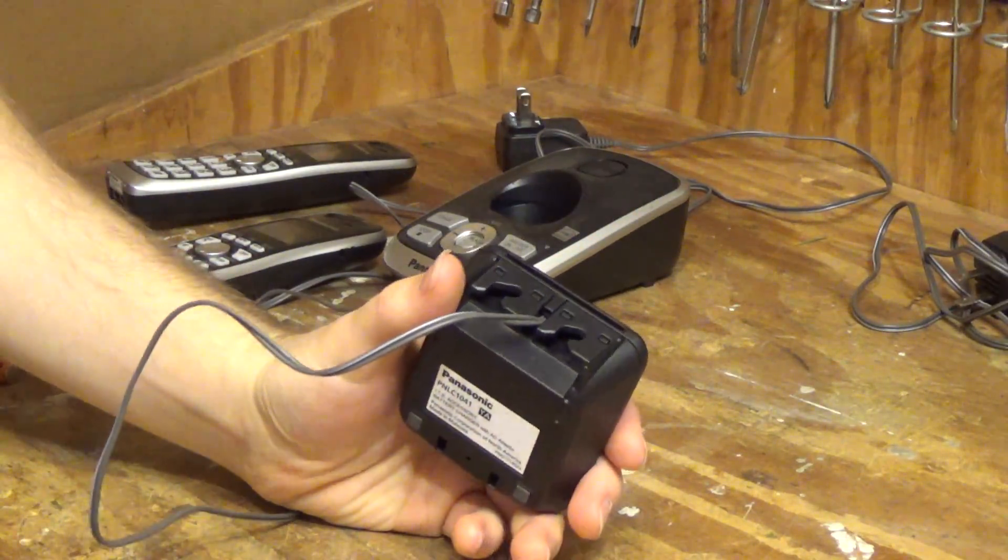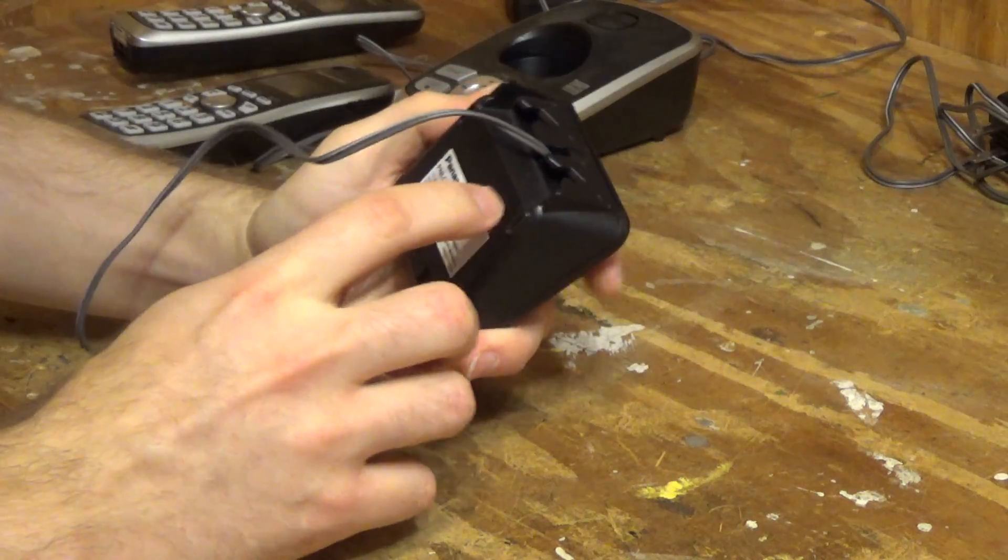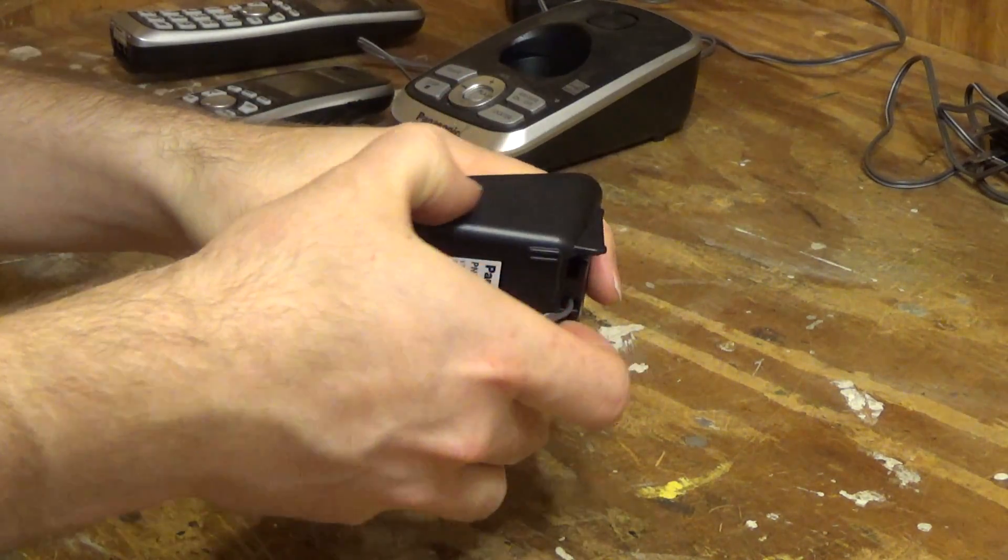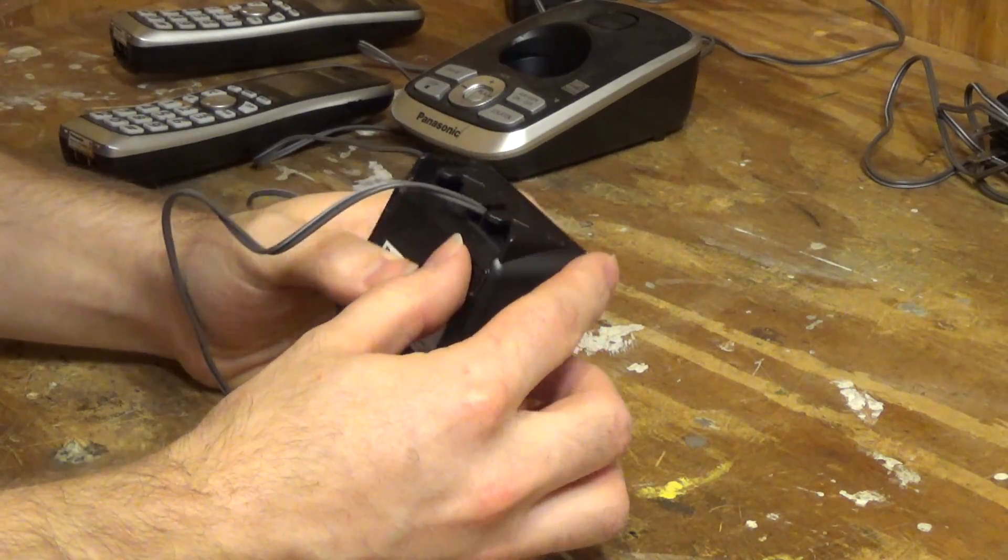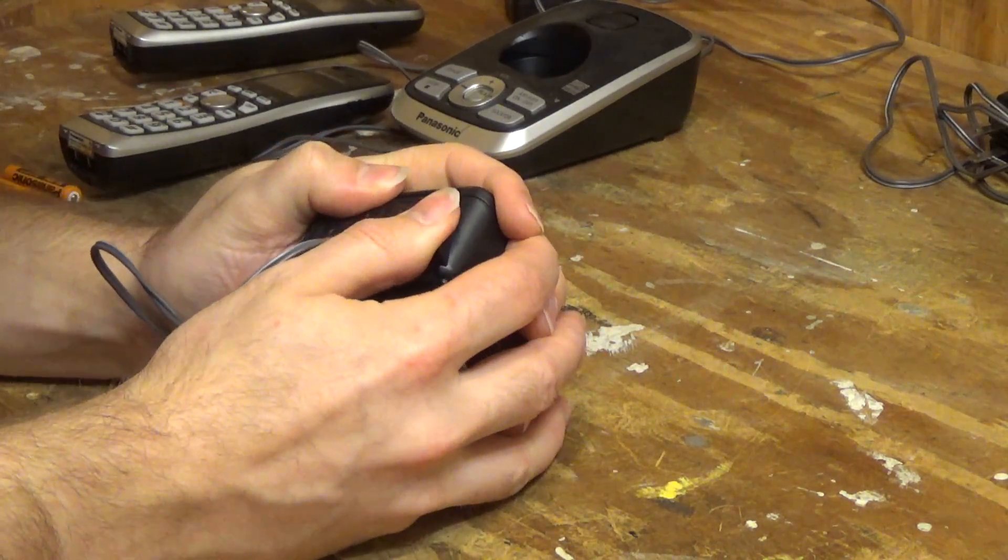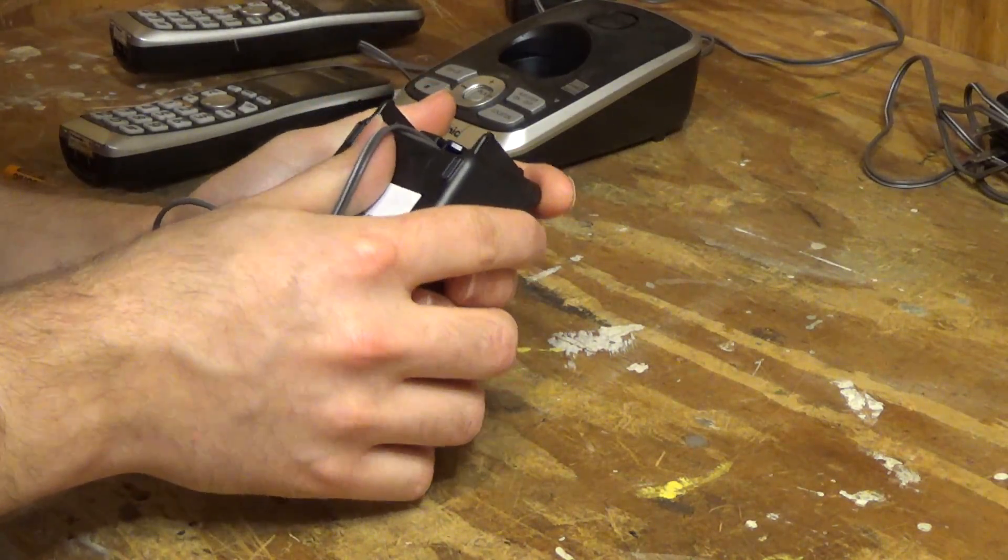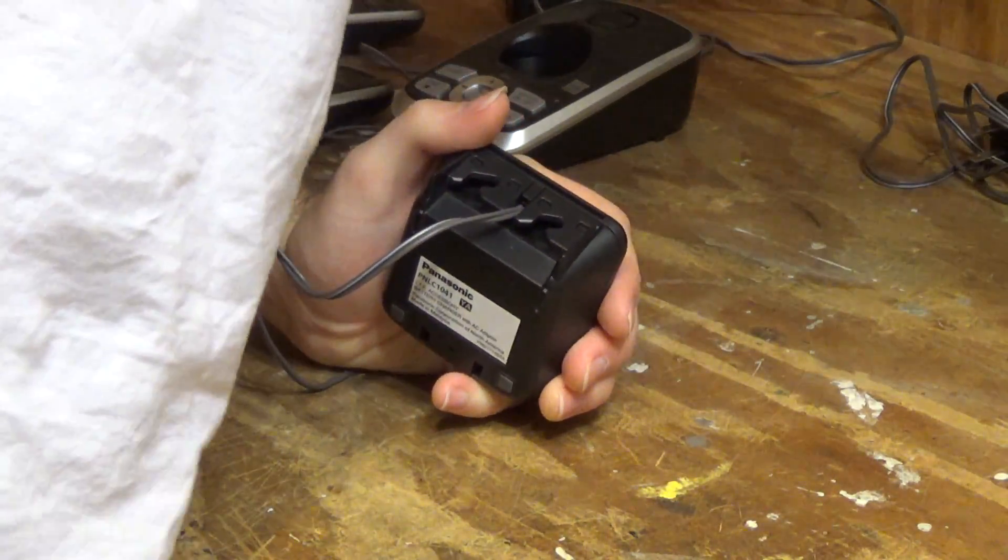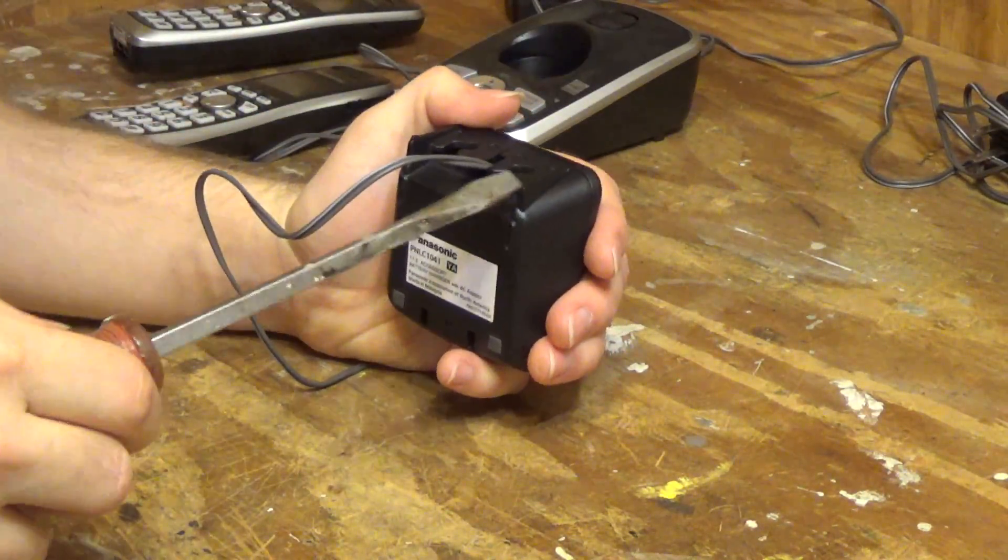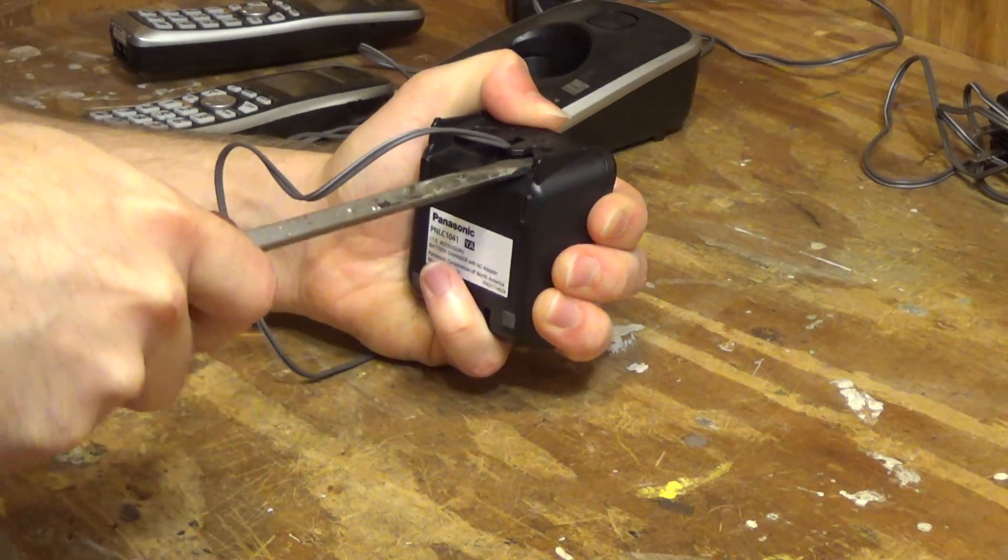It looks like this is not really made to come apart that easily. But there is a seam here so I'm guessing this can come apart. And then there appears to be some tabs. There appears to be four tabs there. So what I'm going to try to do is, well this is not even budging.